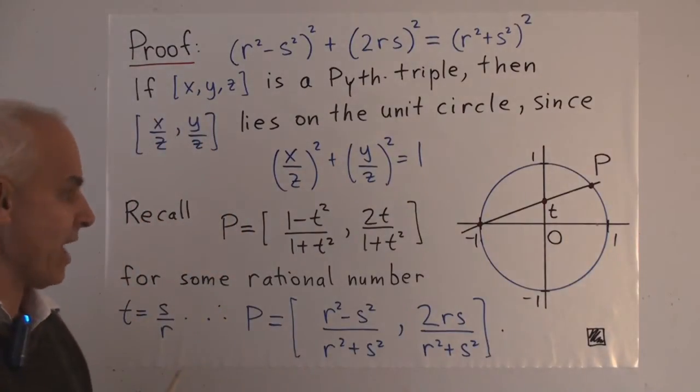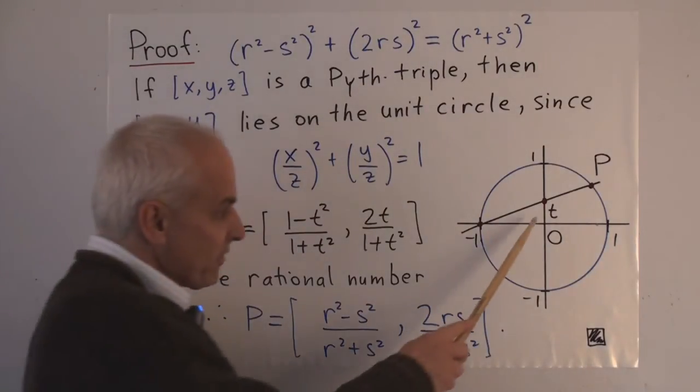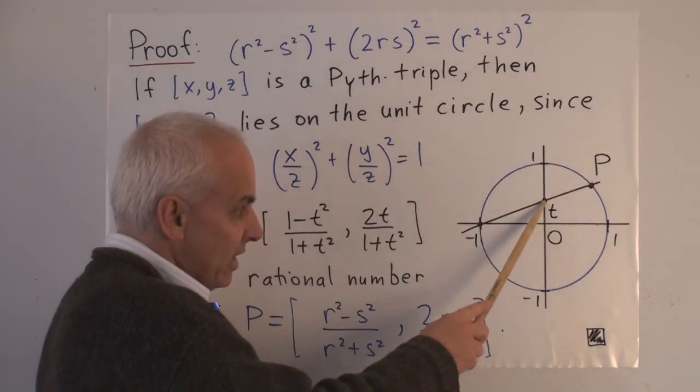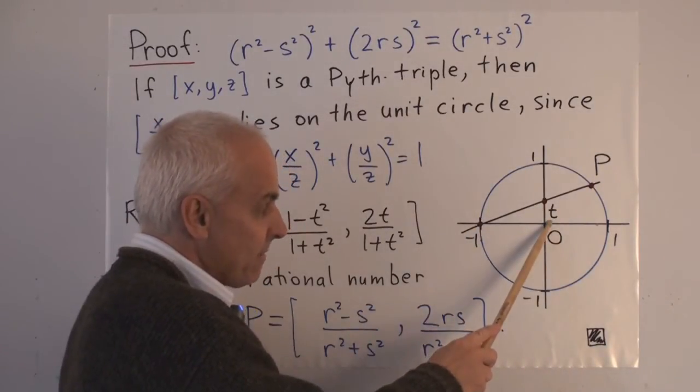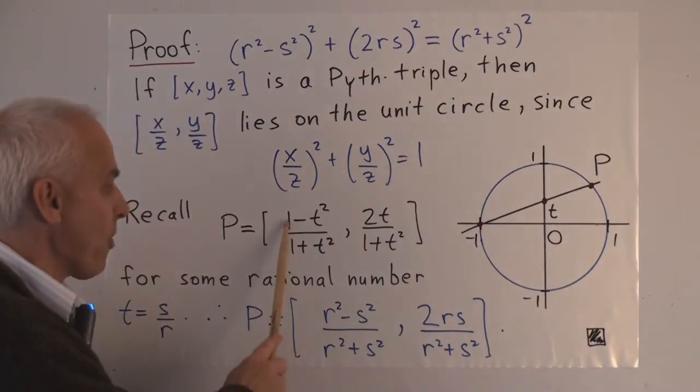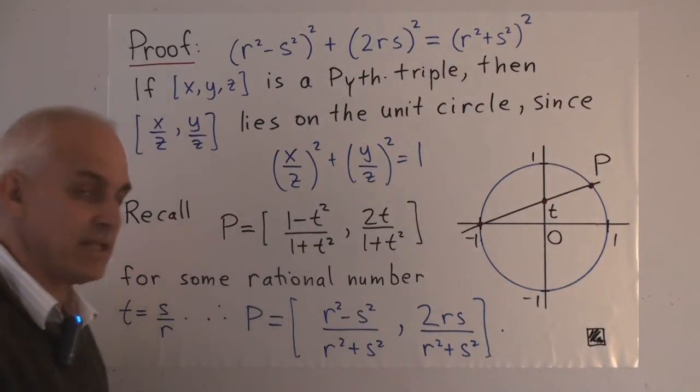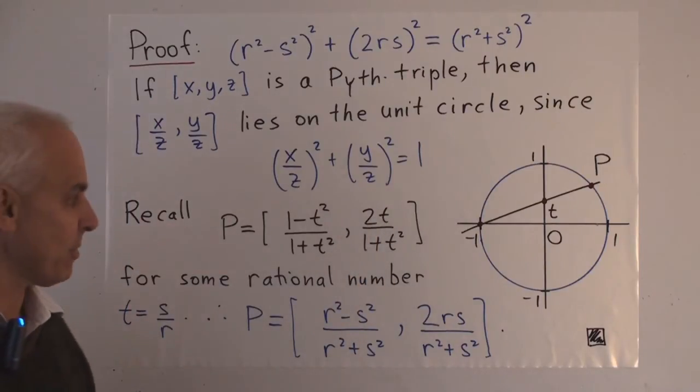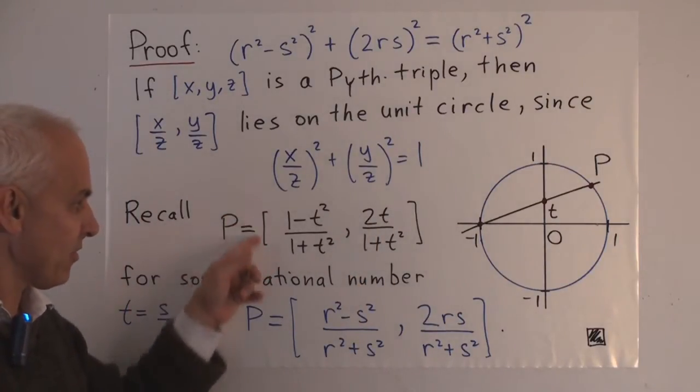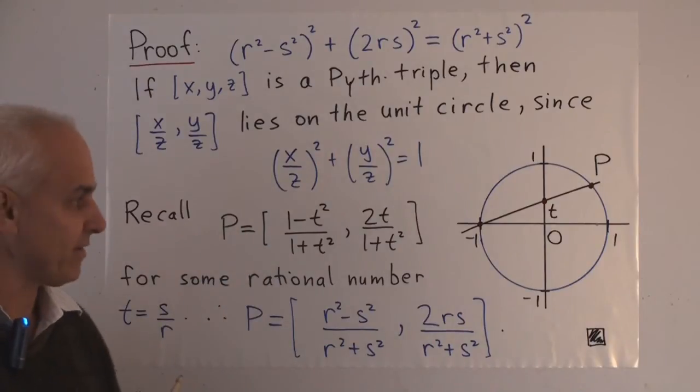And let me remind you what happens. That in terms of this coordinate t here, if we draw a line like this, if that's t, then this point p is going to have the form (1-t²)/(1+t²), 2t/(1+t²). So please have a look at that video to remind yourself how we derive that.